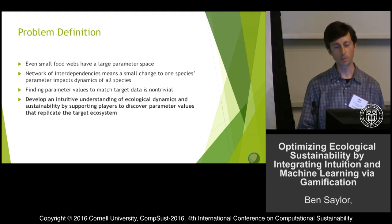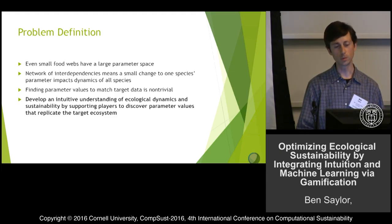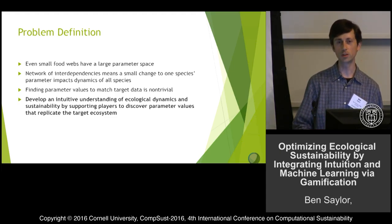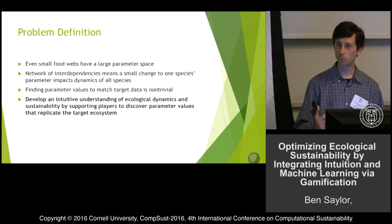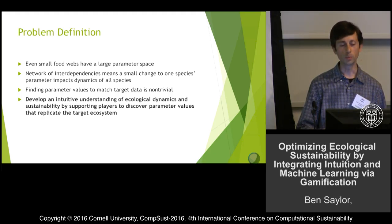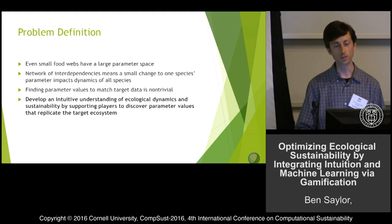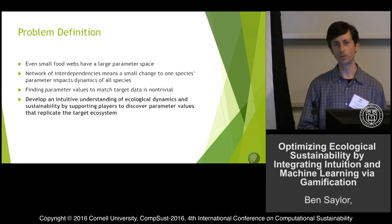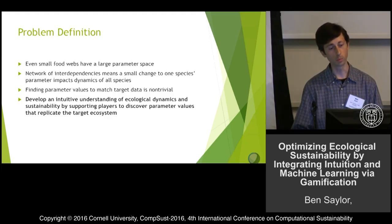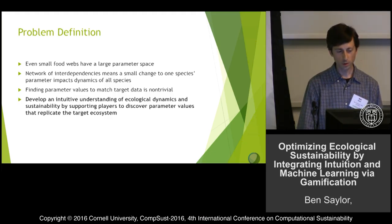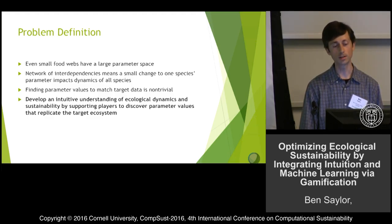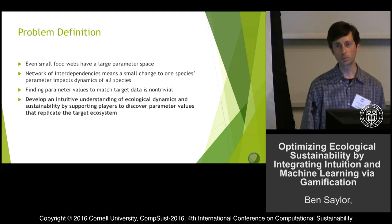The general problem we're working with is this: even small food webs, due to the number of parameters — especially the number of link parameters — have a large parameter space. And the network of interdependencies between species means a small change to one species parameter impacts the dynamics of all species. So finding parameter values to match the target graph is a non-trivial problem.